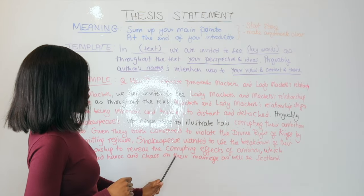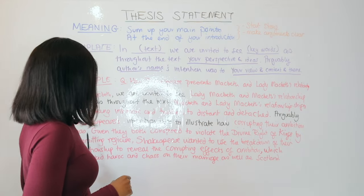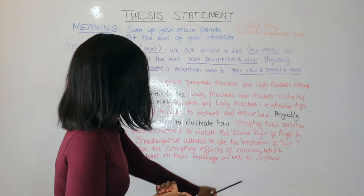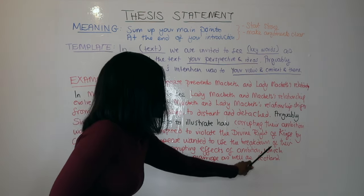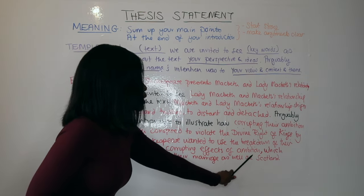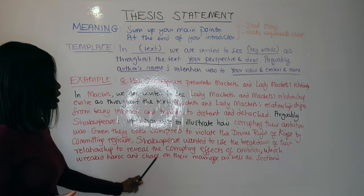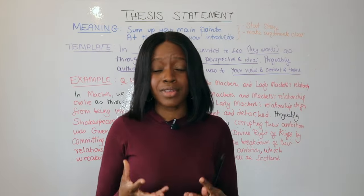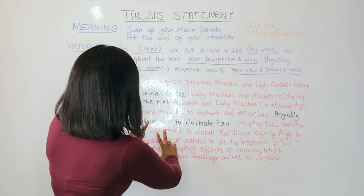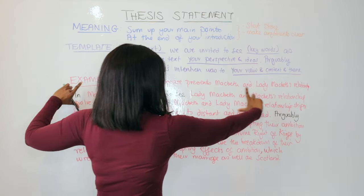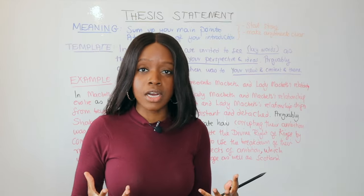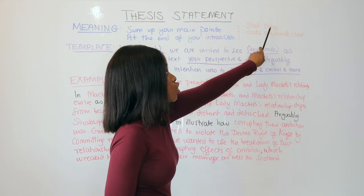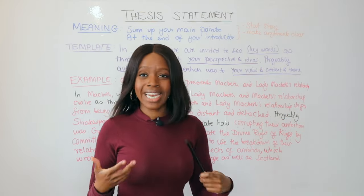Your view, context, and theme take up the bulk — the latter half — of your thesis statement, towards the end of your introduction. Shakespeare's intention was to illustrate how corrupting the ambition was, given they both conspired to violate the divine right of kings by committing regicide — that's context. Shakespeare also wanted to use the breakdown of their relationship to reveal the corrupting effects of ambition — that's theme — which wreaked havoc and chaos in the marriage as well as Scotland. Your introduction opens broadly, then delves into viewpoints, context, and themes.